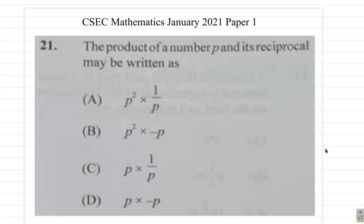The product of a number P and its reciprocal may be written as... So remember, the reciprocal of P is 1 divided by P.